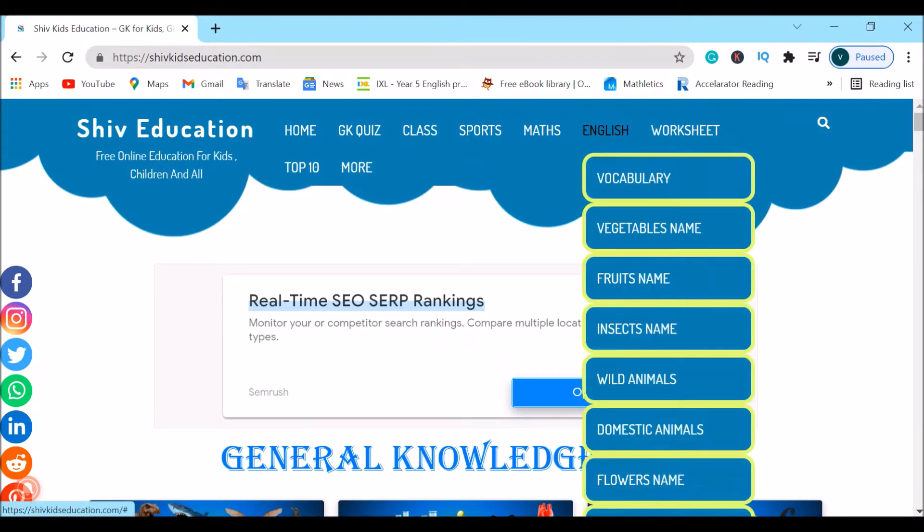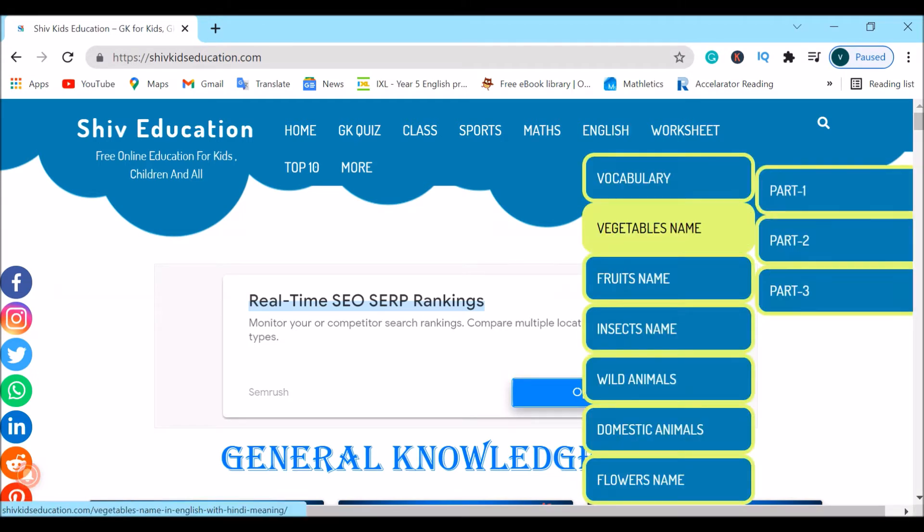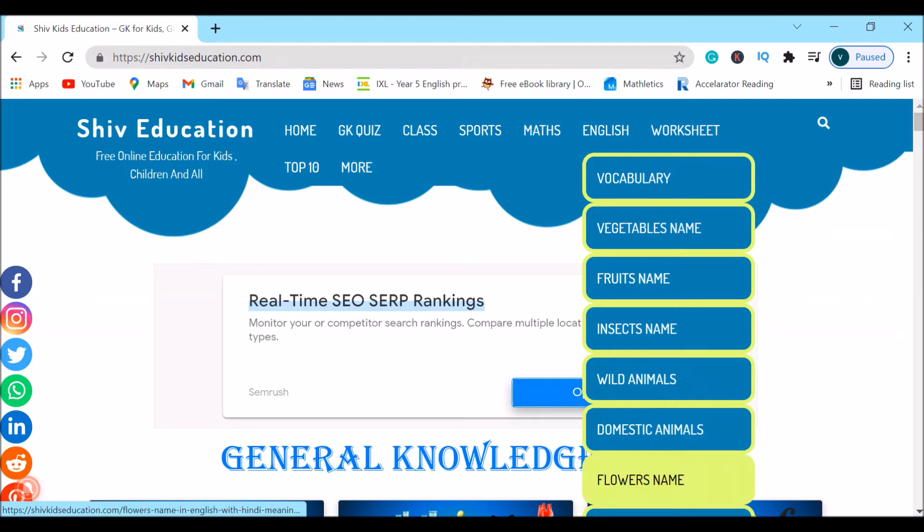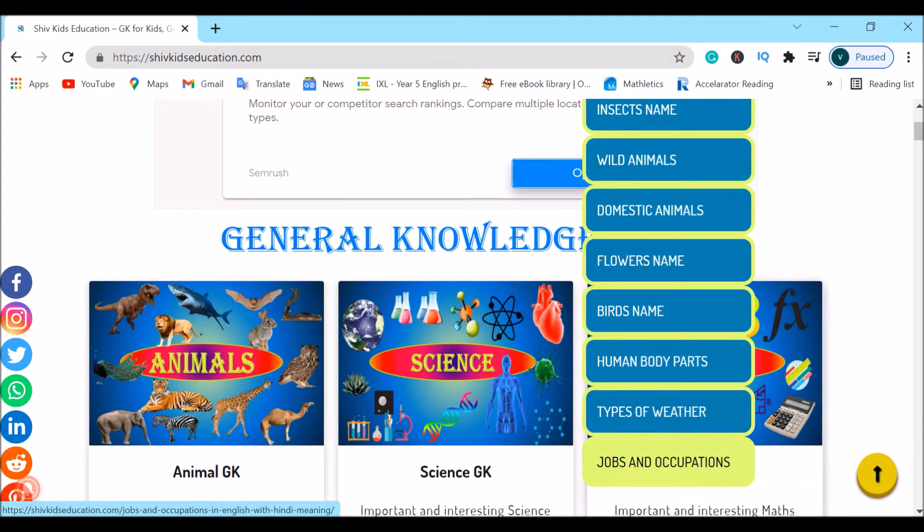Now let's go to English. We have a lot in here as well. Vocabulary. We have Part 1, Part 2, and Part 3 Vocabulary. We also have different types of vocabularies such as Vegetable Names, Fruit Names, Insect Names, Wild Animals, Domestic Animals, Flower Names, Birds Names, Human Body Parts, Types of Weather, and even Jobs and Occupations.